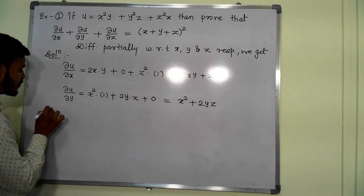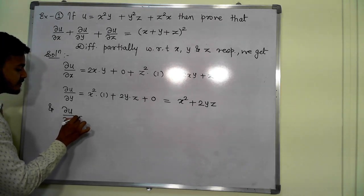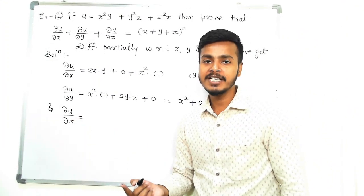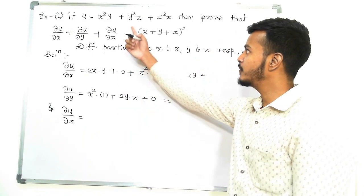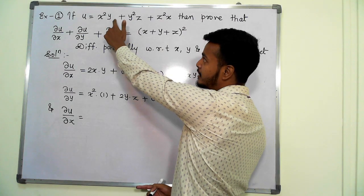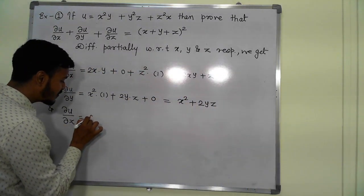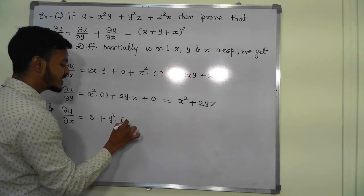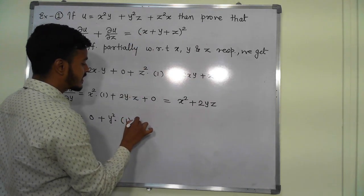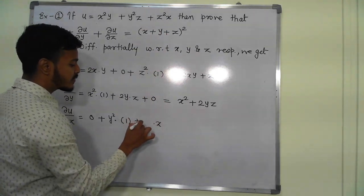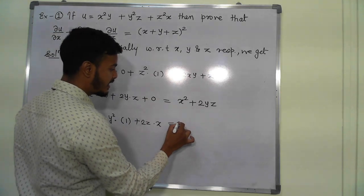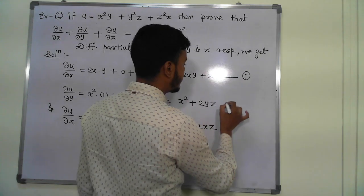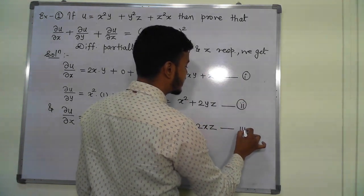Now del u by del z: if you take the derivative of u with respect to z, x and y are kept as constants. The term x squared y has no z, so its derivative is 0. The term y squared z gives y squared times 1, which is y squared. The term z squared x gives x times 2z, which is 2xz. So del u by del z equals y squared plus 2xz. We call these equation 1, equation 2, and equation 3 respectively.